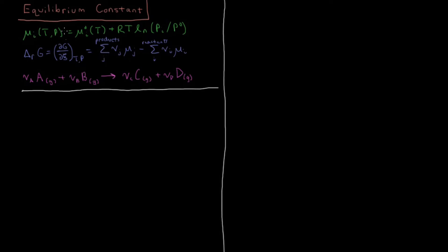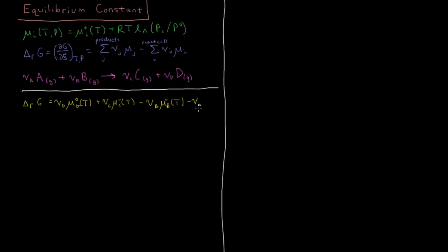Using these expressions for this specific reaction, let's define what the Gibbs energy change of reaction is in terms of chemical potentials and partial pressures. ΔᵣG is going to equal νD·μD⁰(T) plus νC·μC⁰(T) minus νB·μB⁰(T) minus νA·μA⁰(T). That includes all the standard chemical potential terms for all four reactants and products.